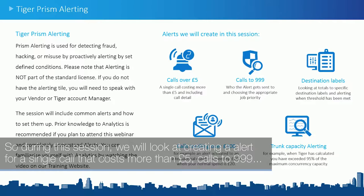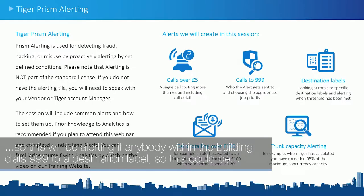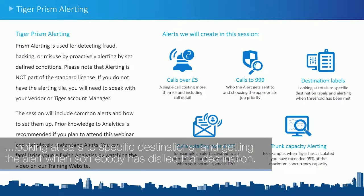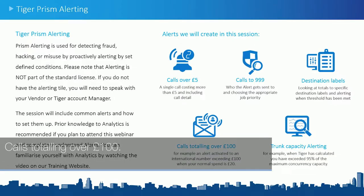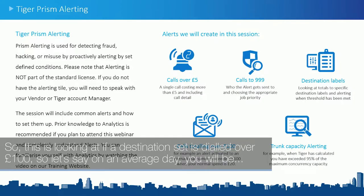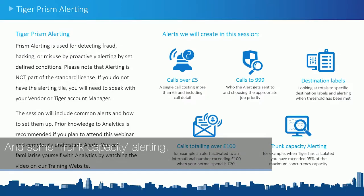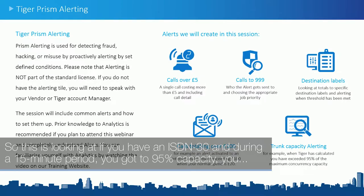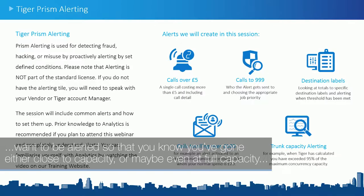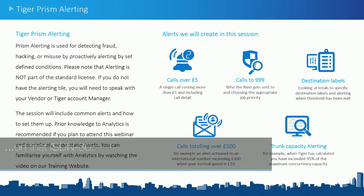During this session we will look at creating an alert for a single call that costs more than £5; calls to 999, alerting if anybody within the building dials 999; calls to a destination label, looking at calls to specific destinations; calls totaling over £100, so if international calls exceed £100 on a given day; and trunk capacity alerting for ISDN30, alerting when you reach 95% capacity during a 15-minute period.